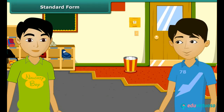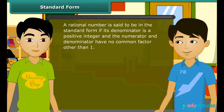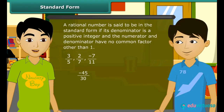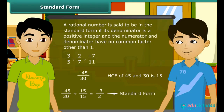Now read this statement. A rational number is said to be in the standard form if its denominator is a positive integer and the numerator and denominator have no common factor other than 1. These rational numbers are in the standard form because their numerator and denominator have no common factor other than 1. If the numbers are not in standard form, then they are reduced to standard form. For example, minus 45 by 30 is not in standard form. We reduce it by dividing the numerator and denominator by their HCF. Here the HCF of 45 and 30 is 15. So we divide the numerator and denominator by 15 and get minus 3 by 2, which is in standard form.